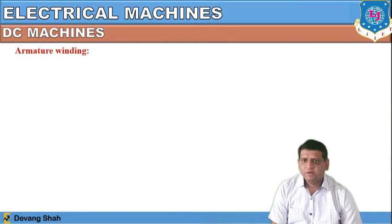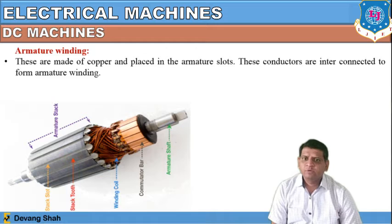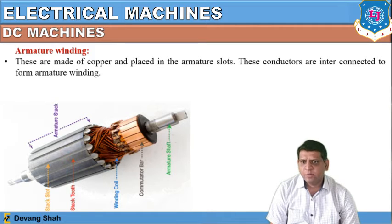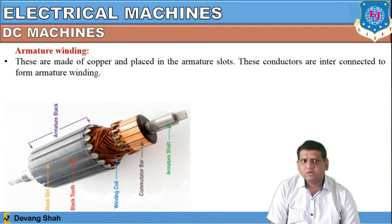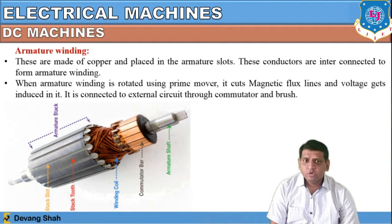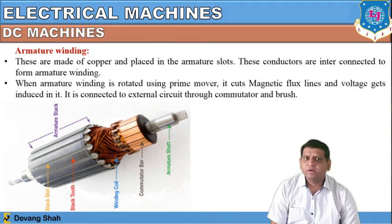Now let us learn about the armature winding. It is made up of copper and placed in the armature slots. These conductors are interconnected to form the armature winding. When the armature winding is rotated using prime movers, it cuts magnetic lines and voltage gets induced in it — this is the law of electromagnetic induction. It is connected to the external circuit through a commutator and brush.